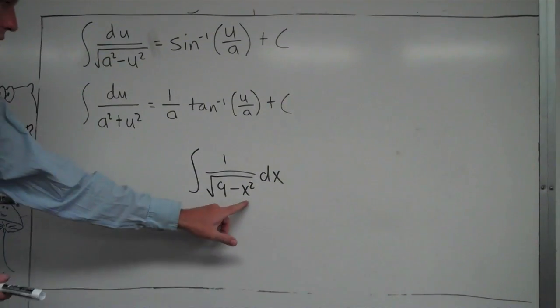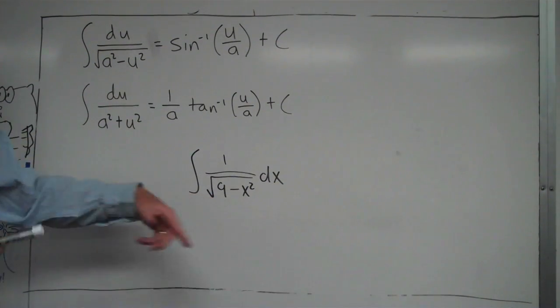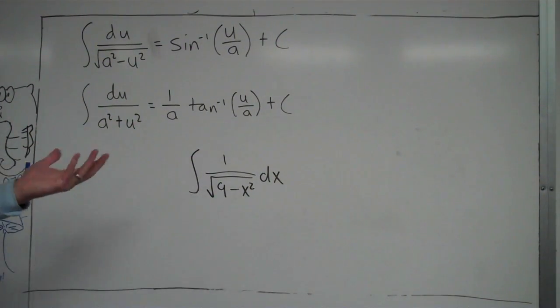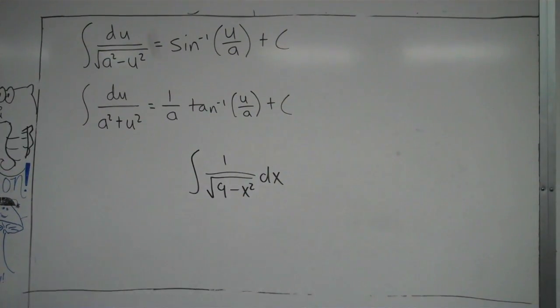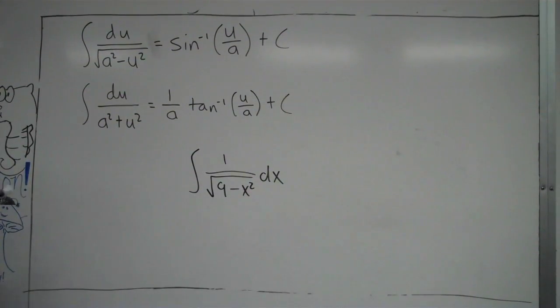U-substitution wouldn't work because if you let u equal 9 minus x squared, the derivative is negative 2x, but there's no x to cancel out, so it wouldn't work out. It wouldn't be a natural log or anything else. In this case, we'd be using inverse trig. Between the two formulas, you can clearly see it's got to be this one because of the square root.